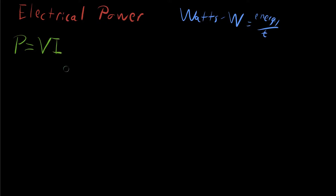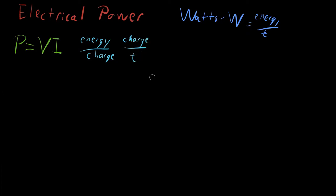This makes sense because voltage is energy over charge, and current is charge over time — the rate of flow of electrical charge, electrons flowing. When you multiply V and I, the charges cancel out and you get energy over time, which is watts.